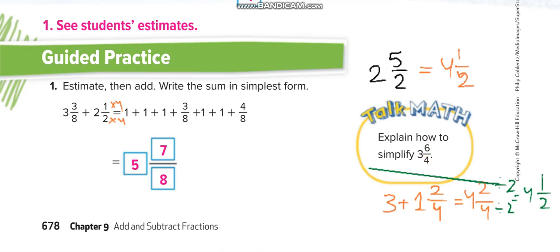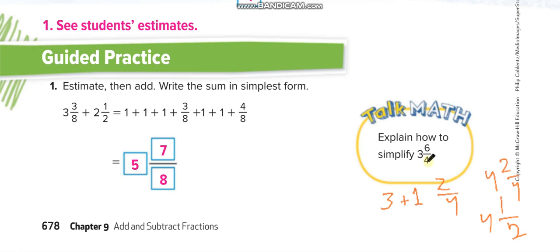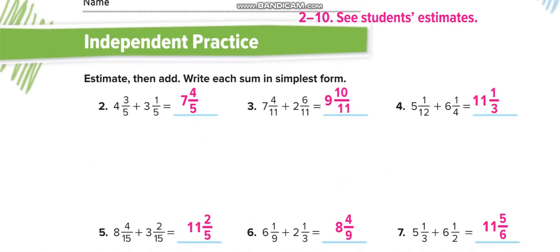To simplify an improper fraction in a mixed number, check how many times the denominator fits into the numerator. For example, with 6/4: how many 4s fit in 6? Just 1. Add that 1 to the whole number — so 3 becomes 4. The remainder is 6 minus 4 equals 2, giving 4 and 2/4. Simplify by dividing by 2 to get 4 and 1/2. Whenever the numerator is bigger than the denominator, use this method.